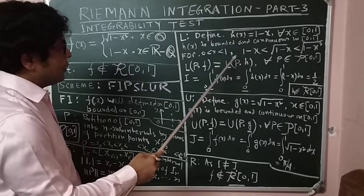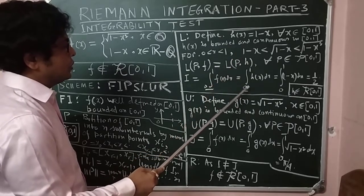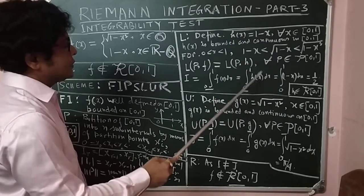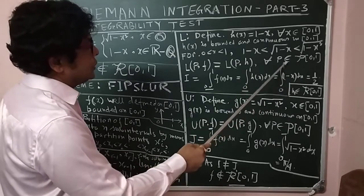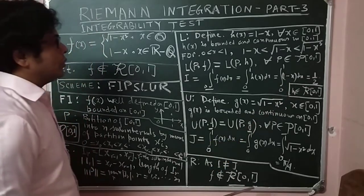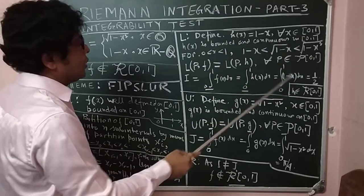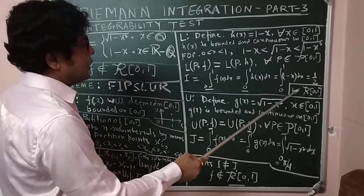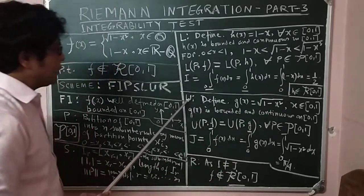Now we can define the lower integral: I = ∫₀¹ f(x)dx (lower bar) is actually the supremum of all L(P,f). This equals ∫₀¹ h(x)dx = ∫₀¹ (1-x)dx = 1/2. Since h is in the interval [0,1], its lower integral equals the integral as h belongs to R[0,1], that is h is Riemann integrable.